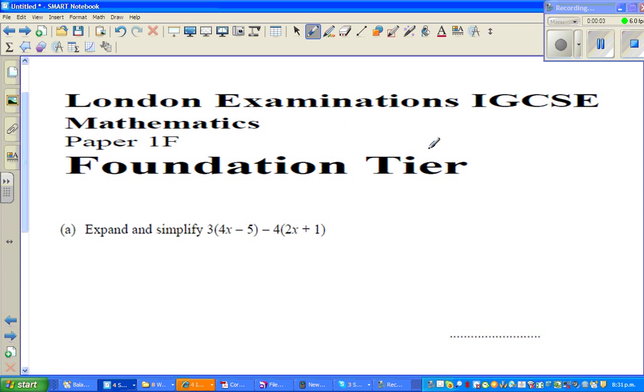In this video, these questions have been taken from London Examinations IGCSE. The first question is expand and simplify: 3(4x - 5) - 4(2x + 1). When you're expanding and simplifying...